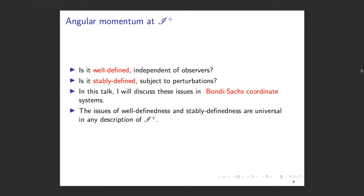Secondly, we want it to be stably defined — in the sense that, imagine one day when we can really observe this. Whenever you're doing observation or experiment, you have to allow errors. So the definition has to be very stable: whenever you perturb it a little bit, you should still get an answer within the expected error. And of course, you have to choose a coordinate to describe the physical system. In this talk, I'll discuss these issues in the so-called Bondi-Sachs coordinate system, which has been developed since the 1960s. These issues are actually universal, independent of any kind of description of null infinity.